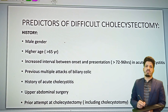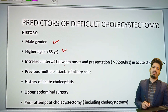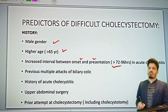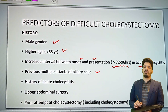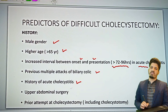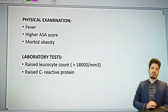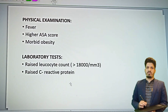Predictors of difficult cholecystectomy include: male patient, age more than 65 years, increased interval between onset and presentation of more than 72 to 96 hours in acute cholecystitis, previous multiple attacks of biliary colic, history of acute cholecystitis, prior upper abdominal surgery, and a prior attempt at cholecystectomy. These all predict that cholecystectomy is going to be difficult.